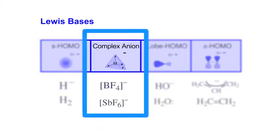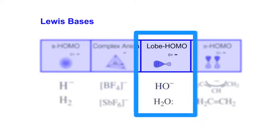We have complex anion Lewis bases. These are species such as the tetrafluoroborate ion and the hexafluoroantimonate ion. The lobe Homo Lewis bases are typical lone pair of electron donating species, typified by the hydroxide ion and water.